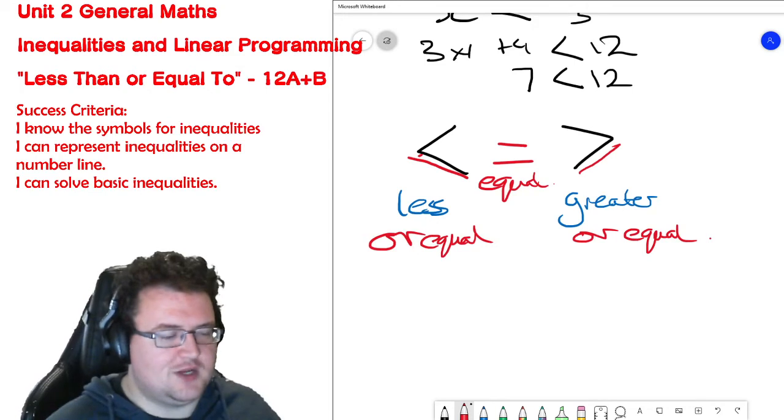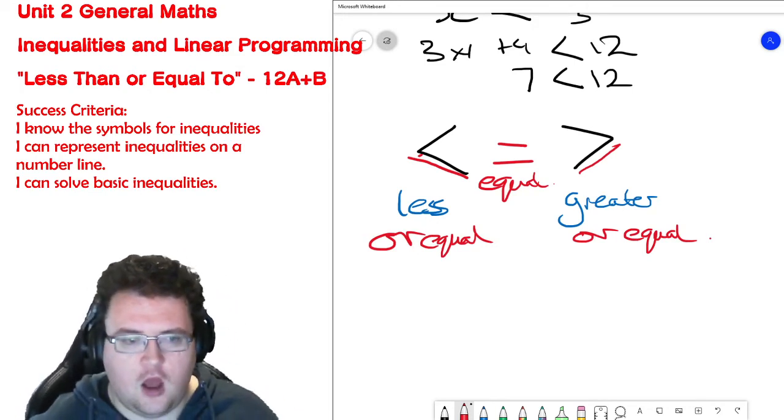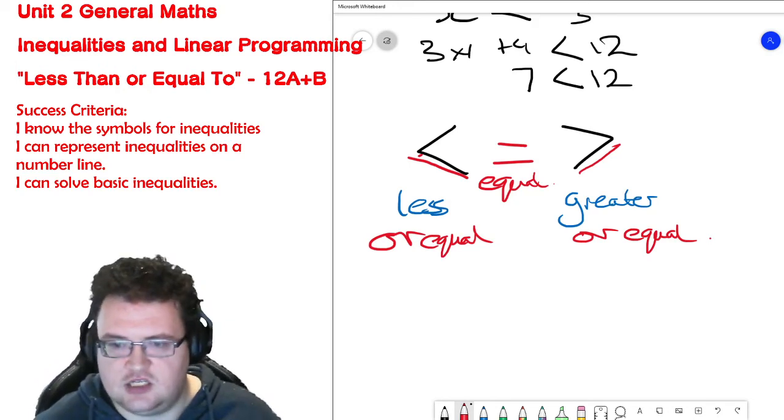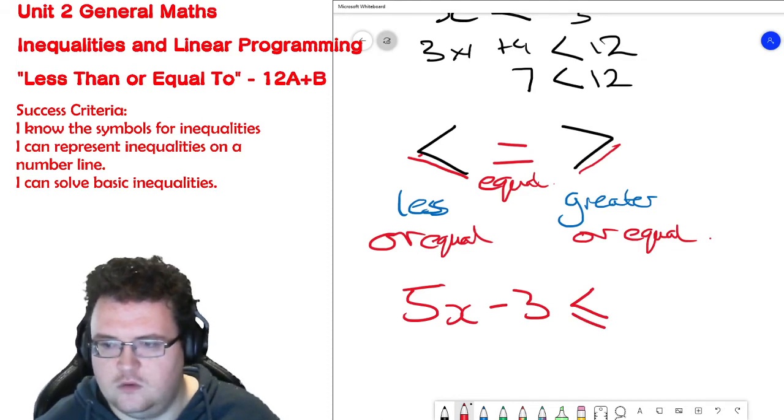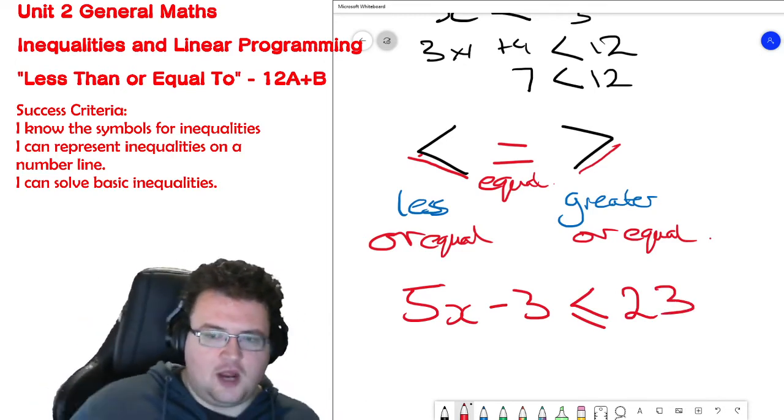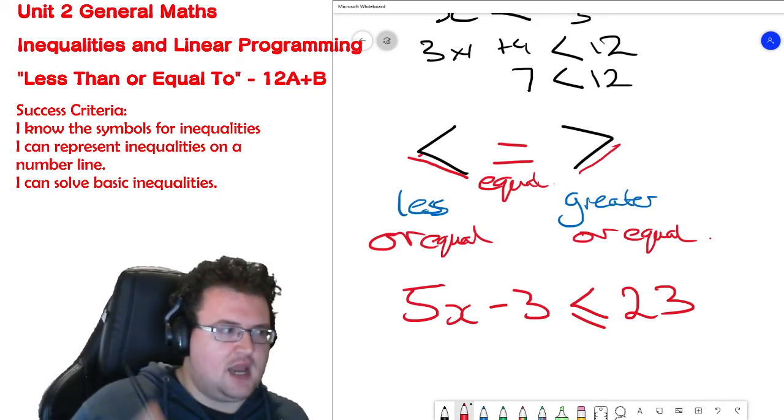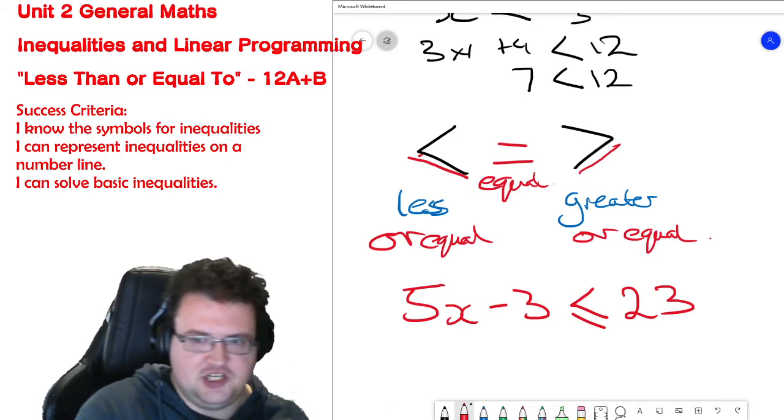So instead of doing equations, we're doing statements. For example, if I want to find... let's do some numbers here: 5x minus 3 is less than or equal to 23. What I'm looking for here are a series of numbers for which that equation is true.